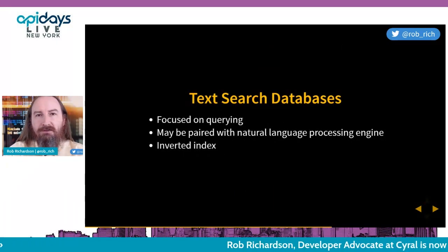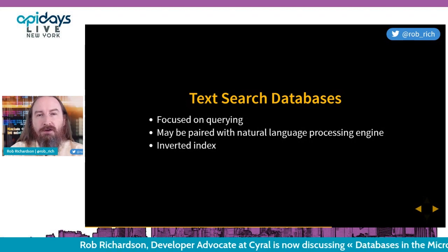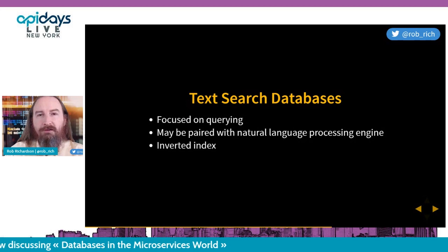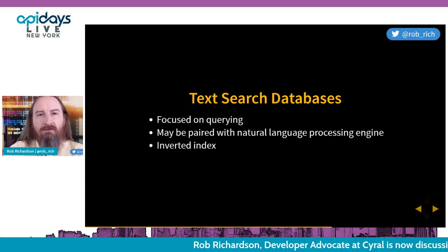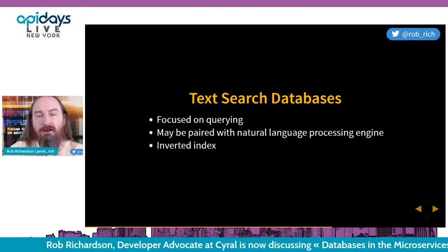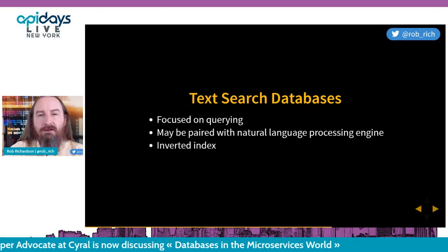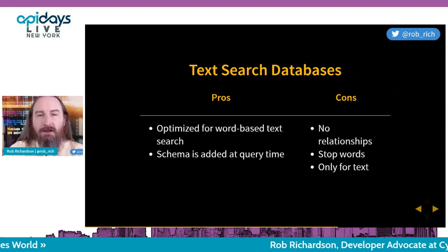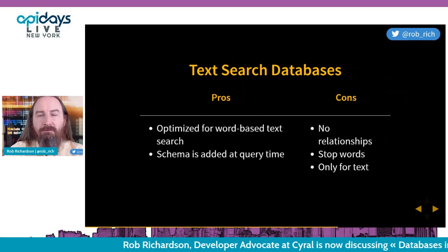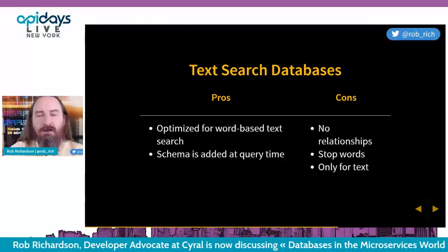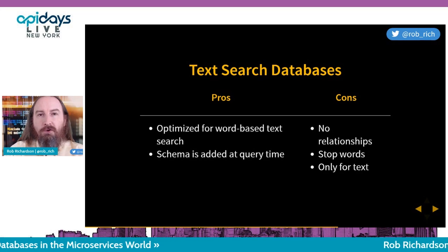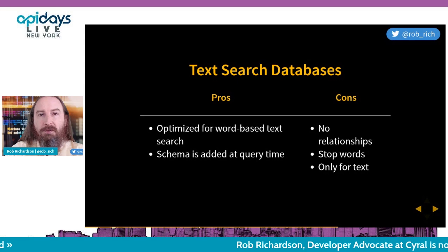Next, text search databases. They're great for identifying a particular phrase in a document, or finding which documents match a phrase. They're often paired with a natural language processing system, and then we end up with a search engine. It uses an inverted index — much like the index at the back of a book — grabbing all words in a document, sticking them in the inverted index, and looking through it to find matching documents. On the upside, it's optimized for text search. On the downside, it's not geared for anything else, so metadata would be stored elsewhere, filtered there, and then cross-referenced with the text search database.